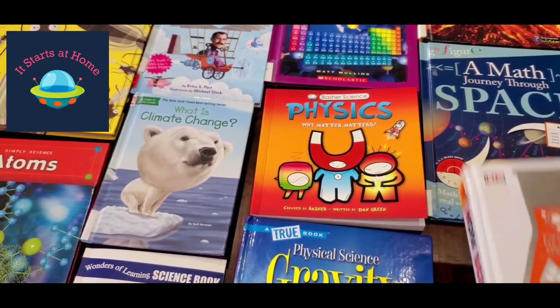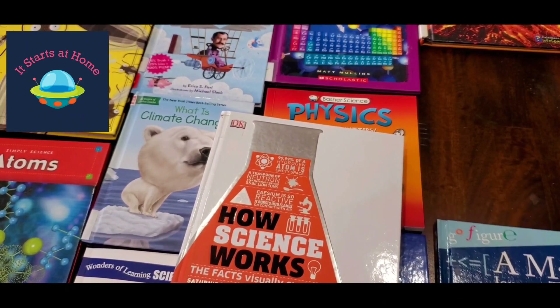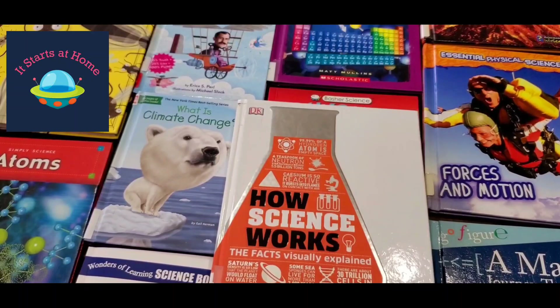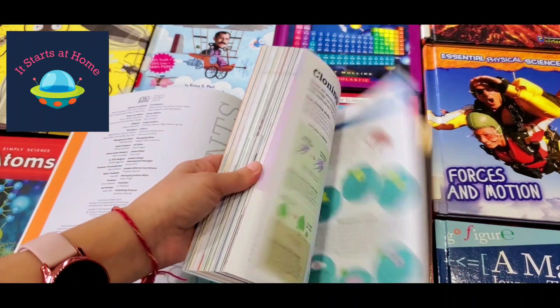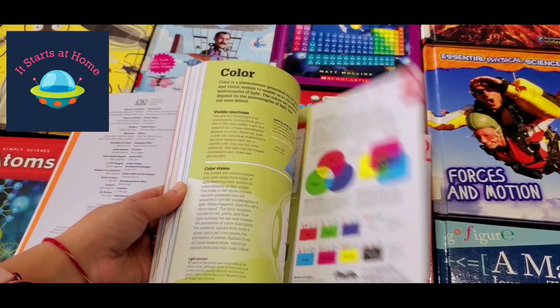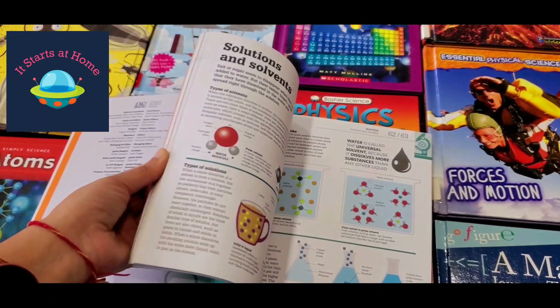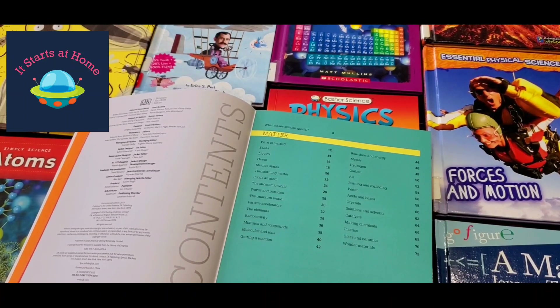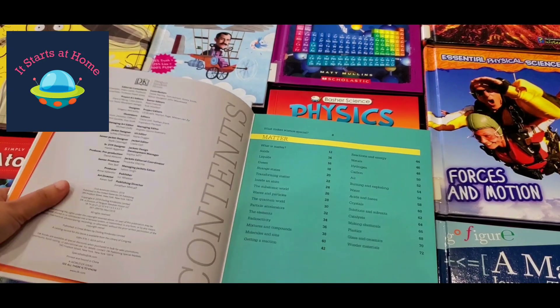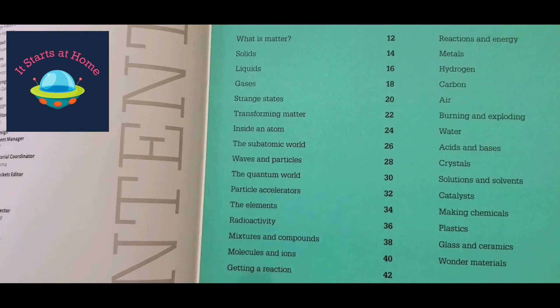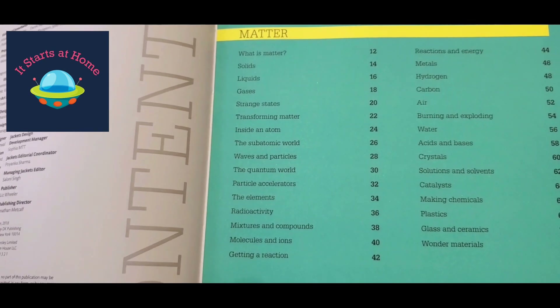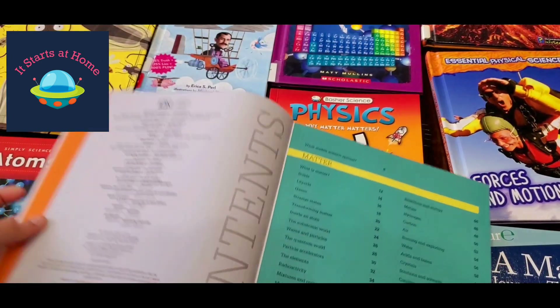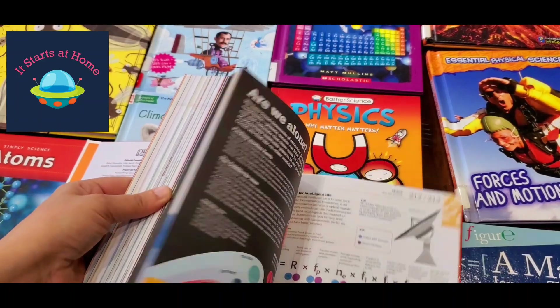And if your child is really looking for a lot of text and still wants to know more, then I highly recommend this book called How Science Works by DK — they have amazing content. This is a text heavy book, so don't get overwhelmed. Only if your child really wants to read and you have time to explain, otherwise do not overwhelm the child — it doesn't make sense. These books are all for their age but this one is intense in terms of text. You have topics like what is matter, solid liquid gas, the sub-atomic world, quantum world, radioactivity, glass and ceramics, wonder materials, burning and exploding. The explanation is a little more deep.